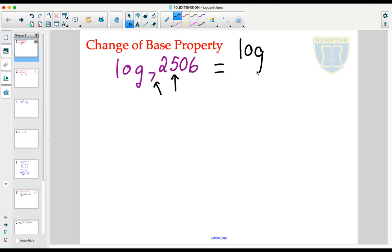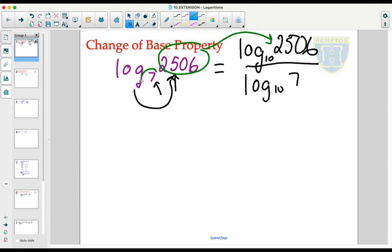If we wanted to change it to base 10, the change of base property says that log base 7 of 2,506 is equivalent to log base 10. Remember, if we don't write the 10, it is base 10. Log base 10 of 2,506, log base 10 of 7. 2,506 becomes the input of the numerator. The base here becomes the input of the denominator.